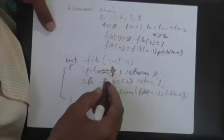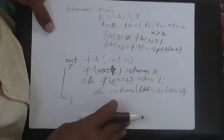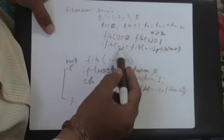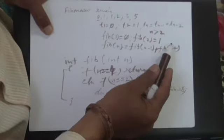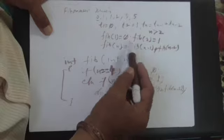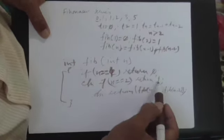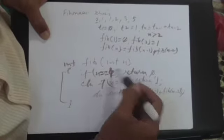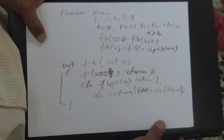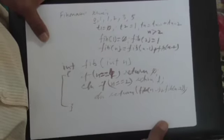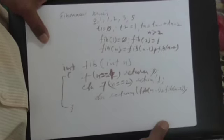So slowly your condition will drive it to the terminal condition. If the nth term, n will take it to n-1 and n-2, and slowly the n will reach 1 and 2. So when it is reaching 2, 1 will be returned. When it is reaching 1, 0 will be returned. So this is how the recursive function for Fibonacci terms is written.